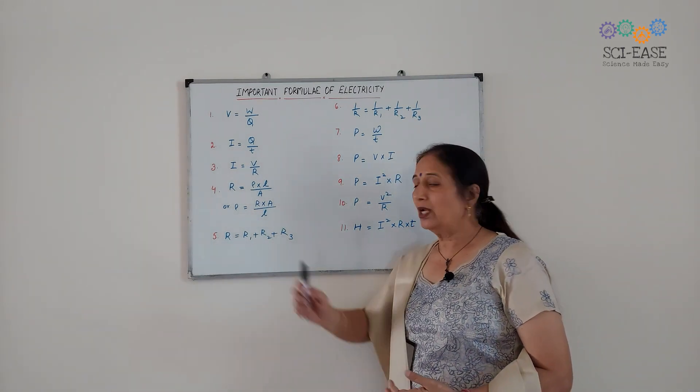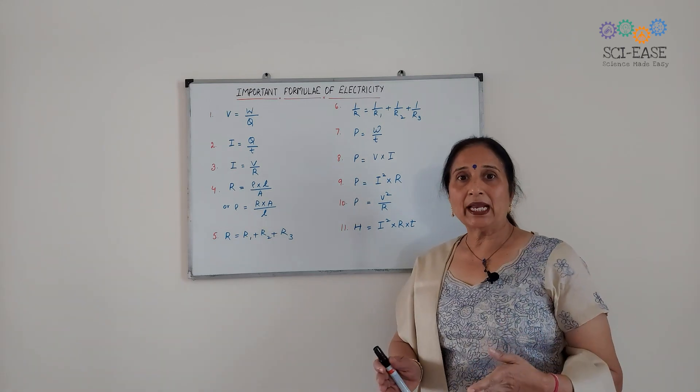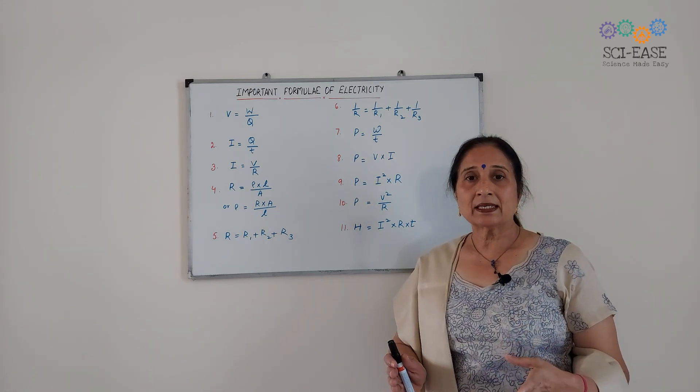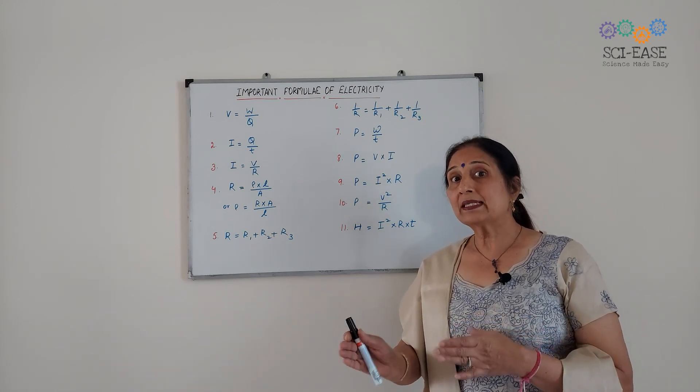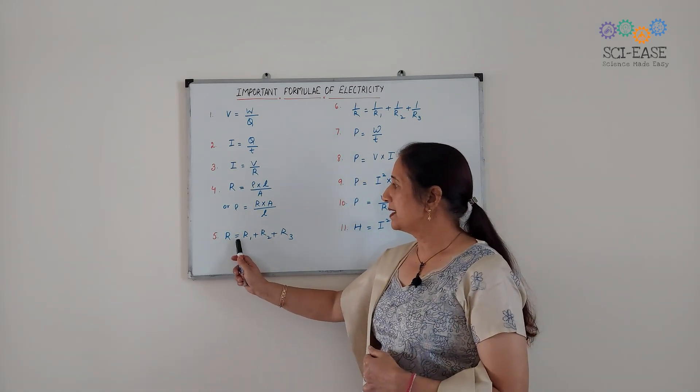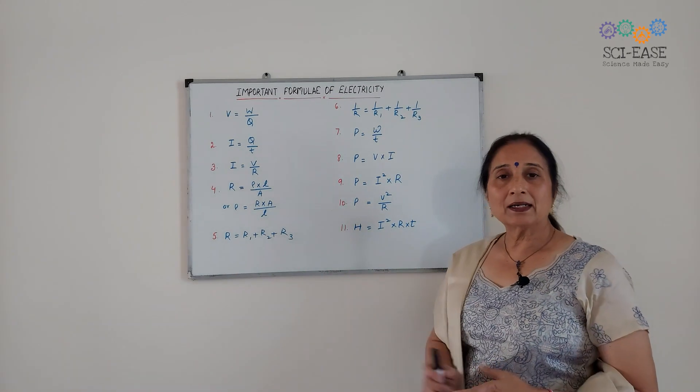Then the next formula, the fifth formula, is when we calculate the total resistance in series. Then R equals R1 plus R2 plus R3.